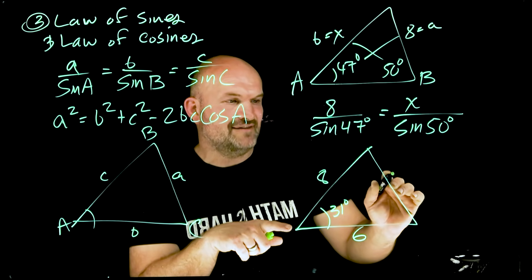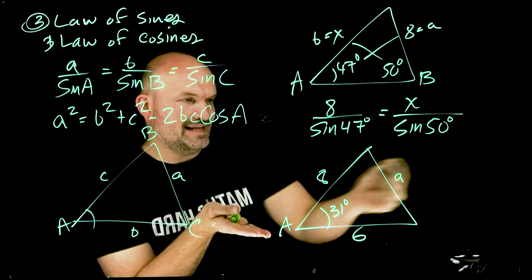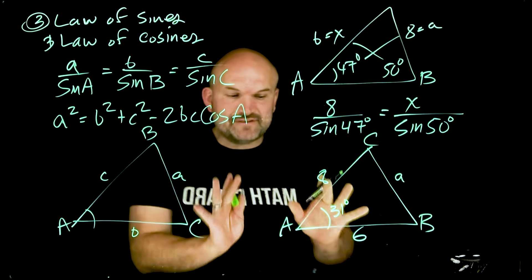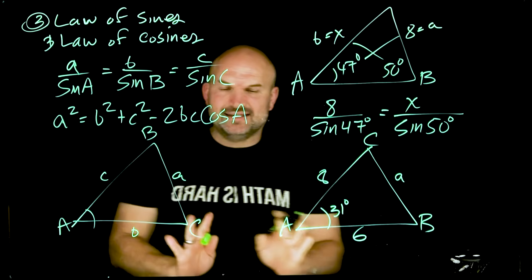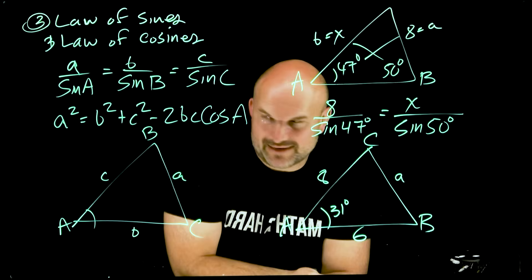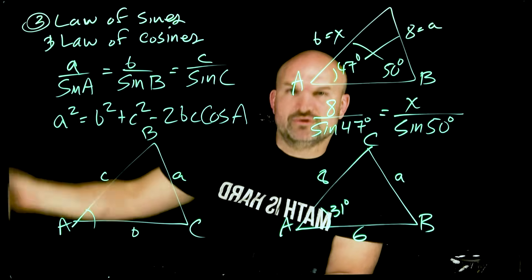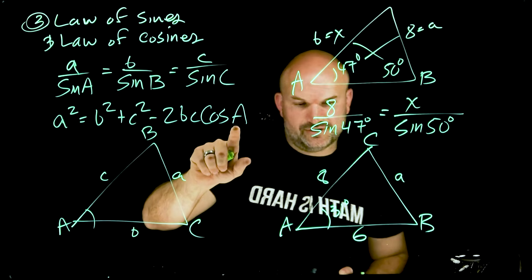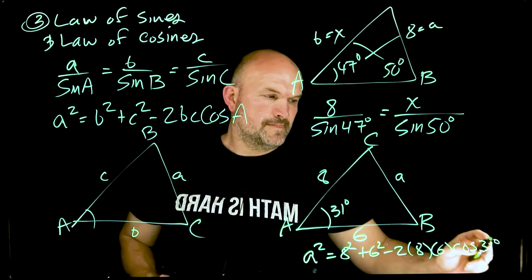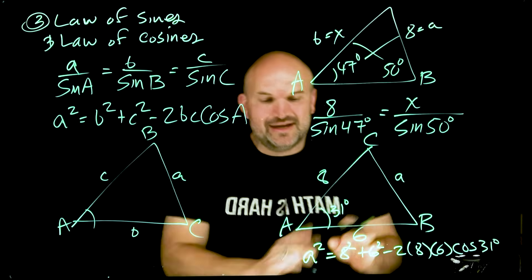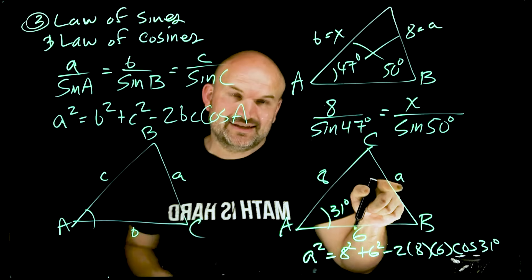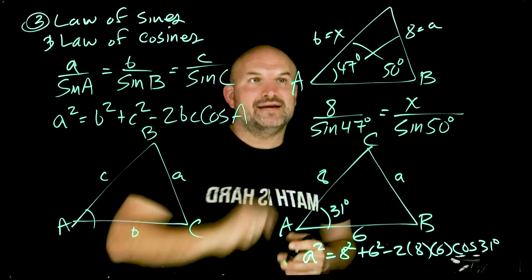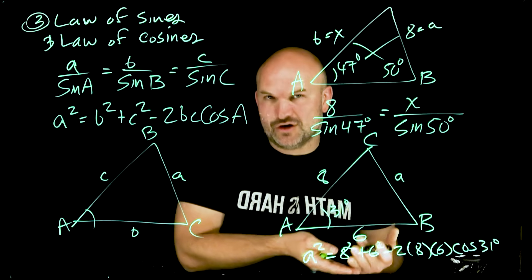In another case, I have an angle but not its opposing side — so I can't use the law of sines directly. However, I have side lengths b and c plus angle A, which is enough for the law of cosines. The labels a, b, and c are interchangeable in the formula, so you can always rewrite it to solve for whatever side or angle you need. You can combine both laws: use the law of cosines first, then apply the law of sines to find remaining missing angles.